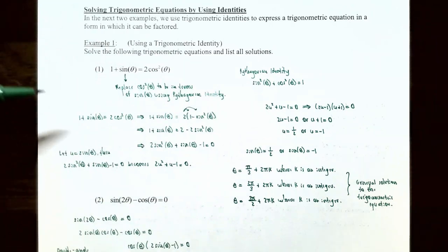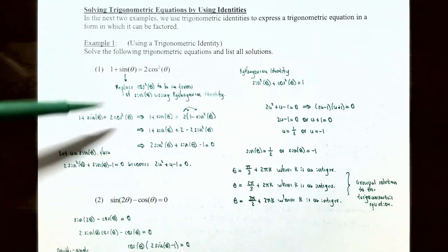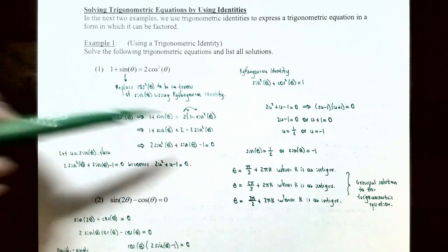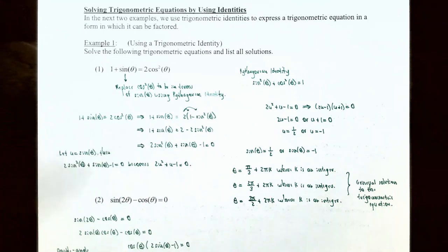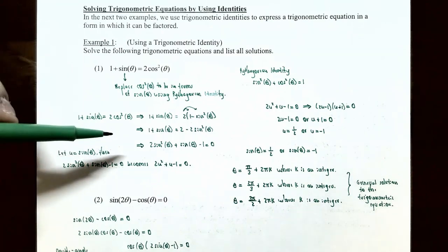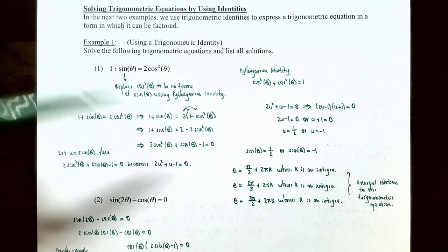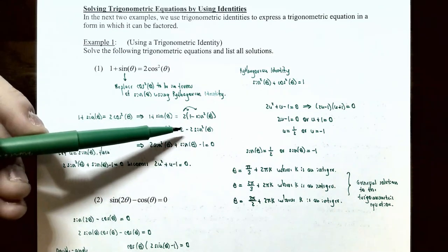The left side of the equation stays the same: 1 plus sine of theta. The right side is replaced with 2 times (1 minus sine squared theta) using the Pythagorean identity. Distributing the 2 gives us: the left side is 1 plus sine of theta, and the right side is 2 minus 2 times sine squared theta. Now let's move all terms to one side so the equation equals zero. Adding 2 sine squared theta and subtracting 2 from the left side gives us 2 sine squared theta plus sine of theta minus 1 equals zero.